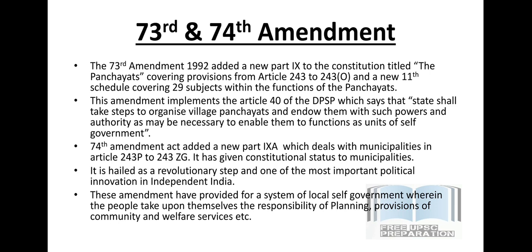What did the Government of India do? The 73rd and 74th Constitutional Amendment Acts were passed. The 73rd Constitutional Amendment Act of 1992 added a new Part — Part 9 — to the Constitution, titled 'The Panchayats.' The provisions are from Article 243 to 243O. A new schedule — the 11th Schedule — was added covering 29 subjects within the functions of panchayats. Before this, there was no constitutional provision about panchayats.